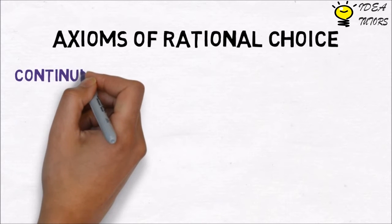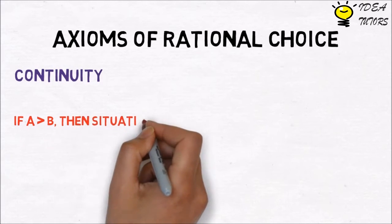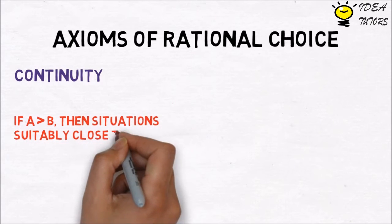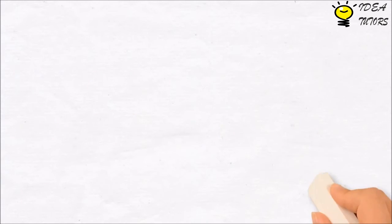Continuity: If A is preferred to B, then situations suitably close to A must also be preferred to B. This is used to analyze individuals' responses to relatively small changes in income and prices.